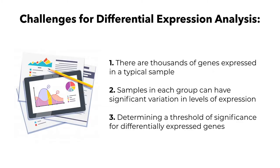There are several factors that make it difficult to identify differentially expressed genes. First, there are thousands of genes in each sample. Samples in each group can have significant variation in expression levels. And even when there is a difference that we've observed, it's hard to know what will be significant enough to say that these are truly differentially expressed genes. To overcome these challenges, we have to turn to statistical analysis.